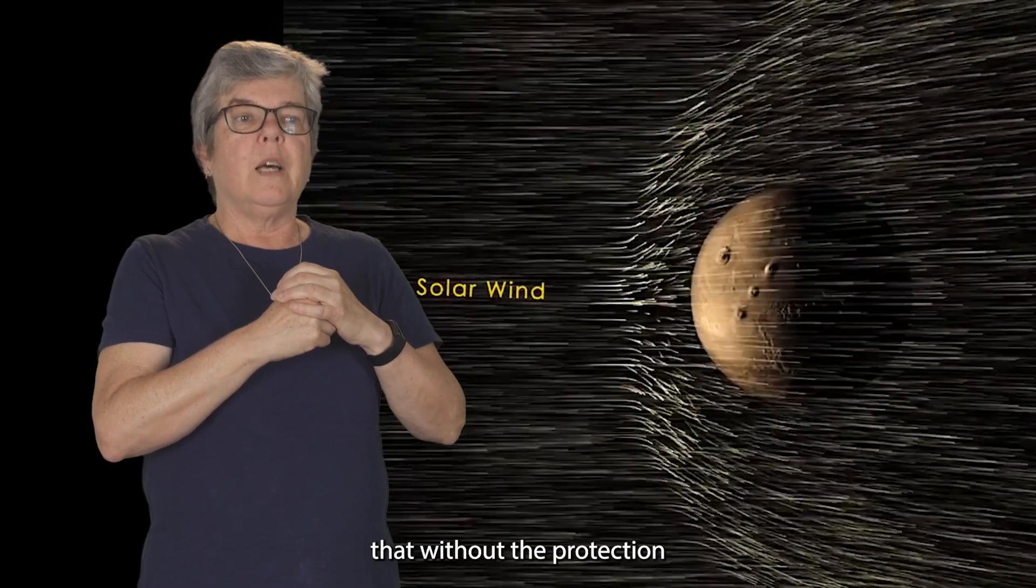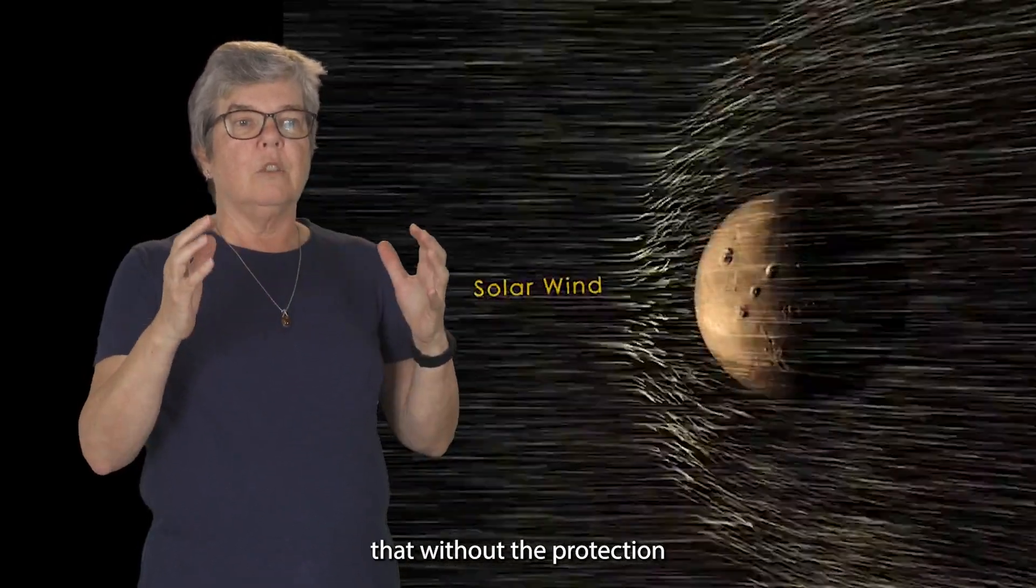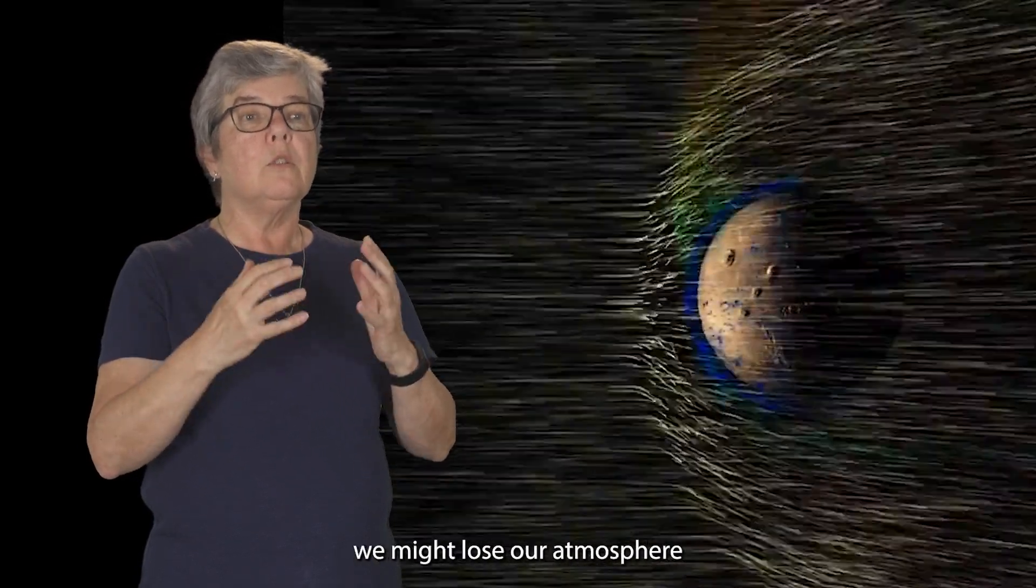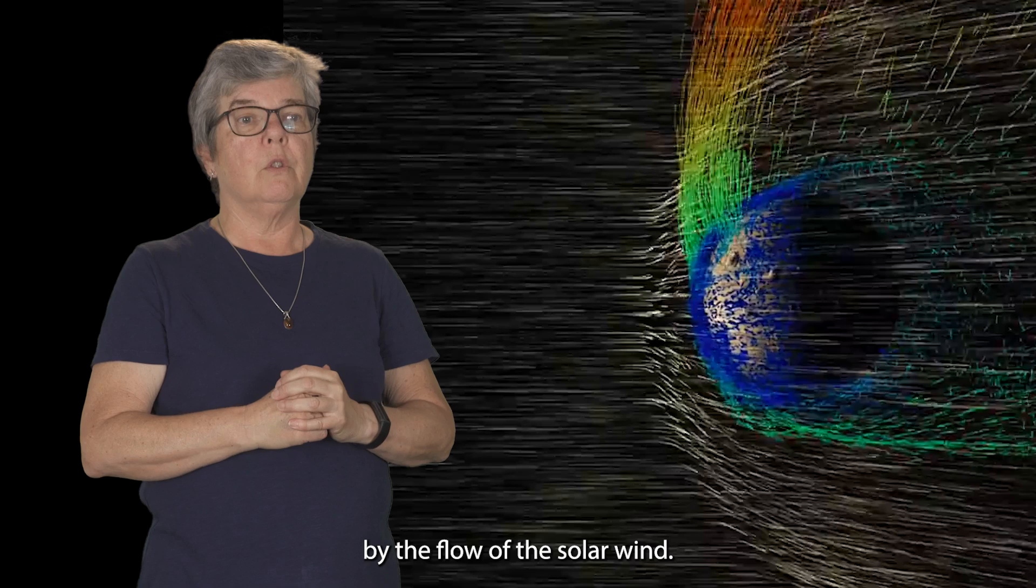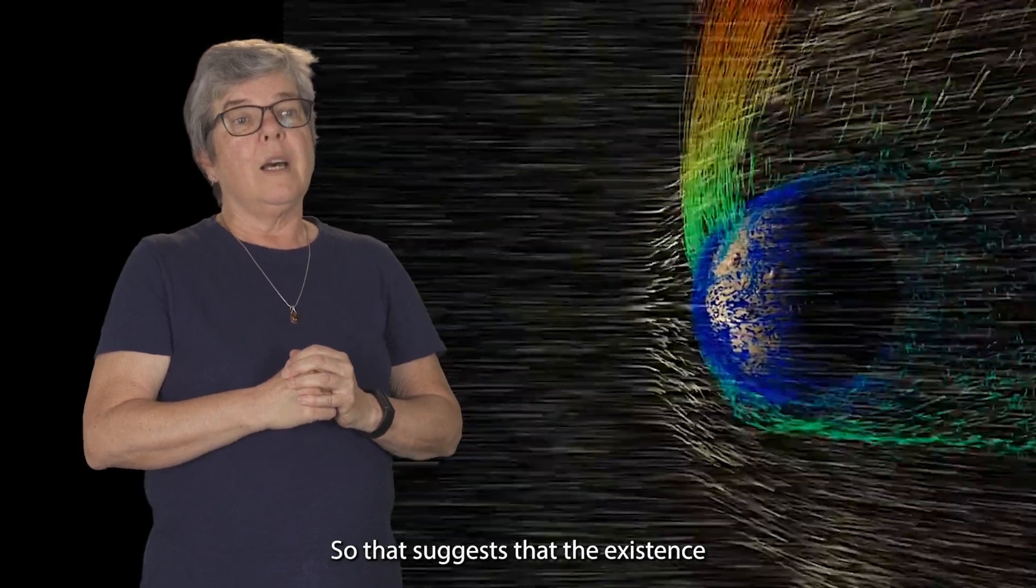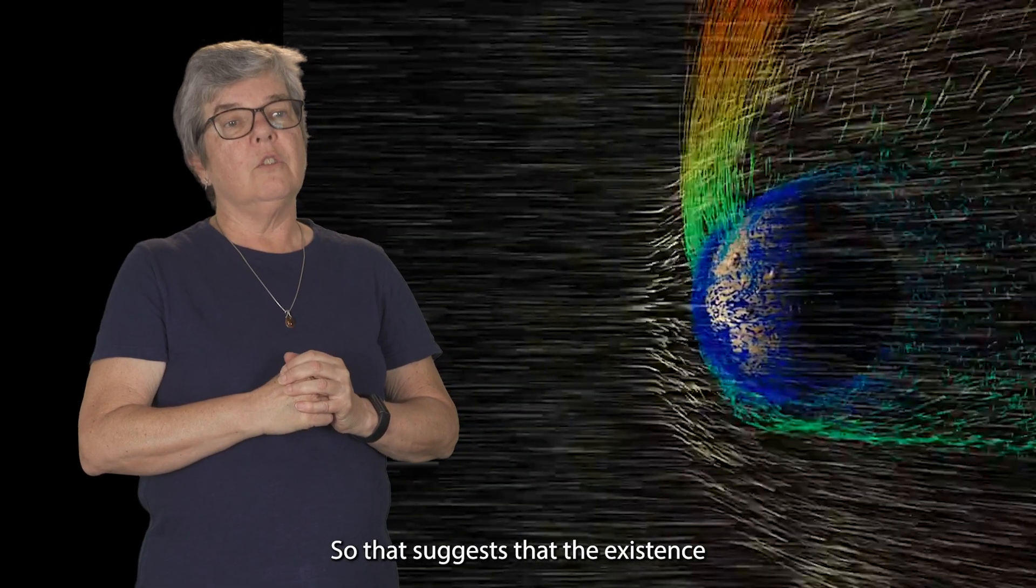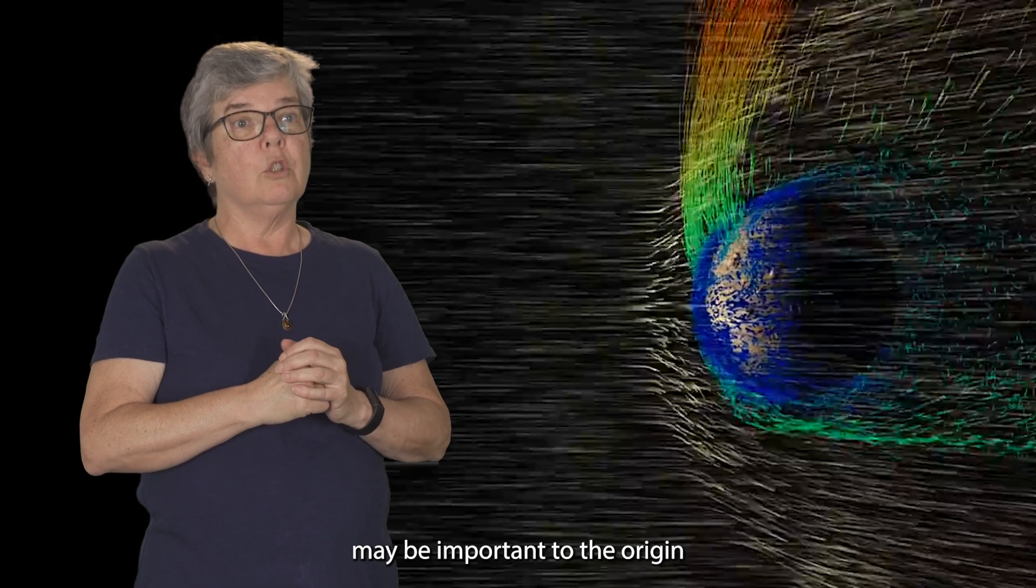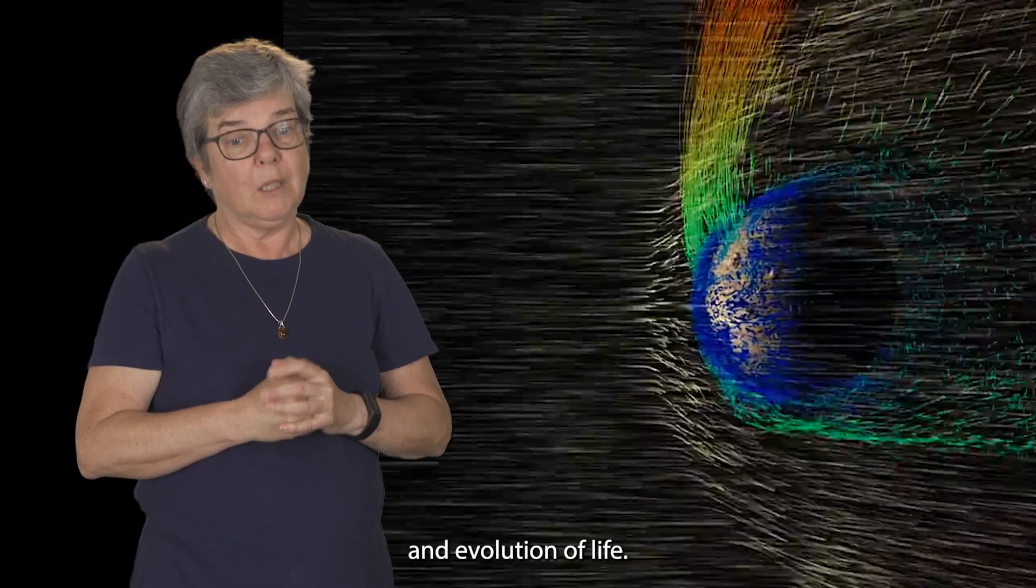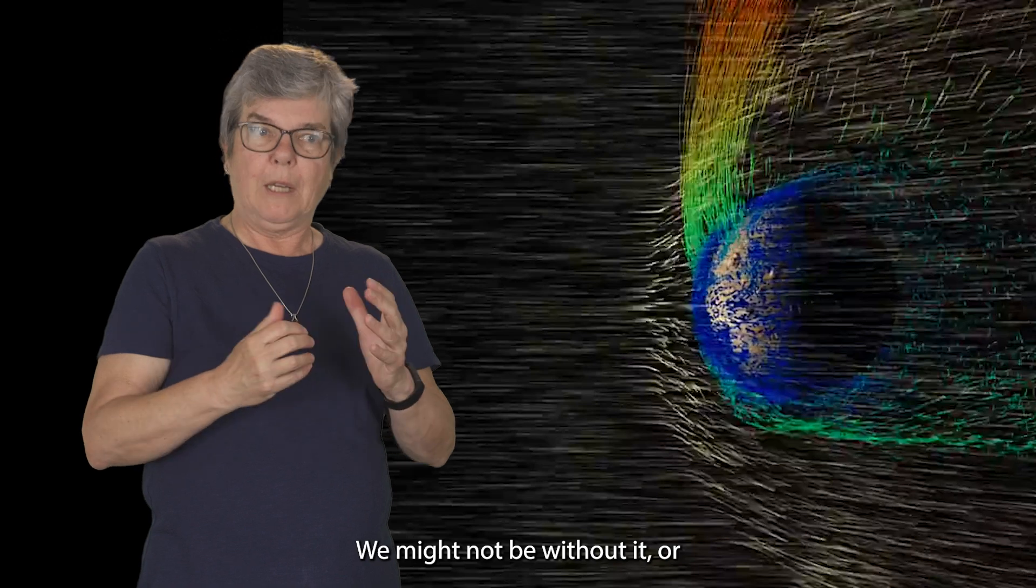It's also true that without the protection of the Earth's magnetic field, we might lose our atmosphere because the atmosphere would be stripped off by the flow of the solar wind. So that suggests that the existence of the Earth's magnetic field may be important to the origin and evolution of life. We might not be here without it, or something else would be here.